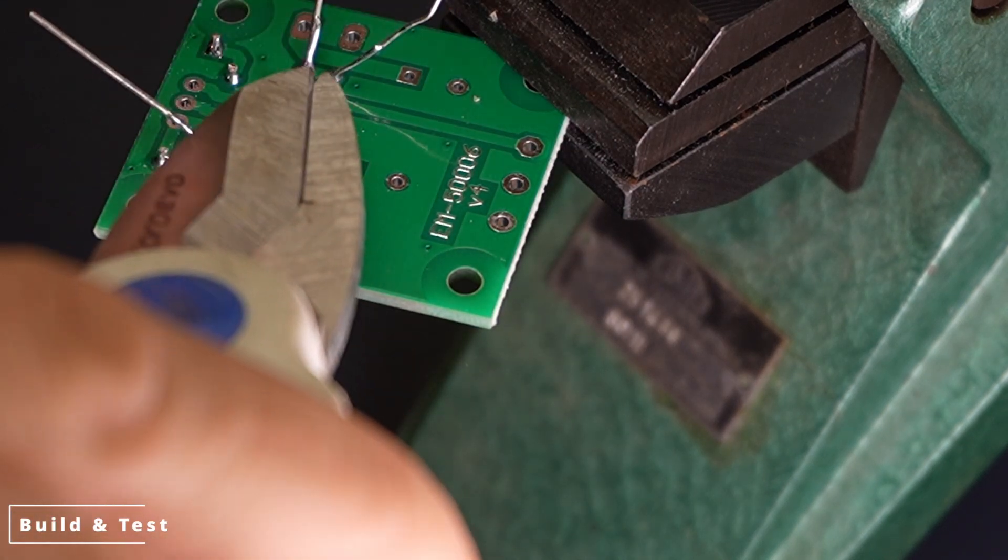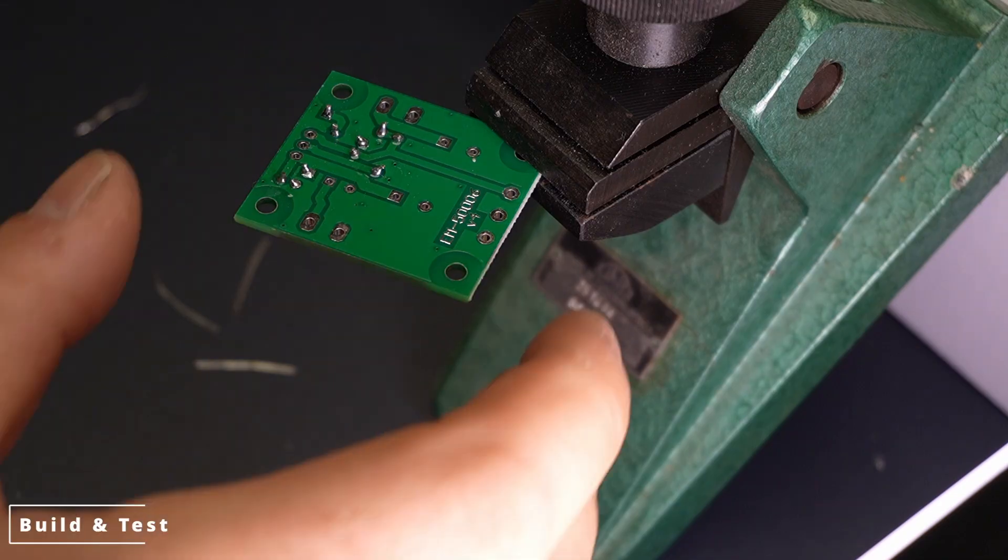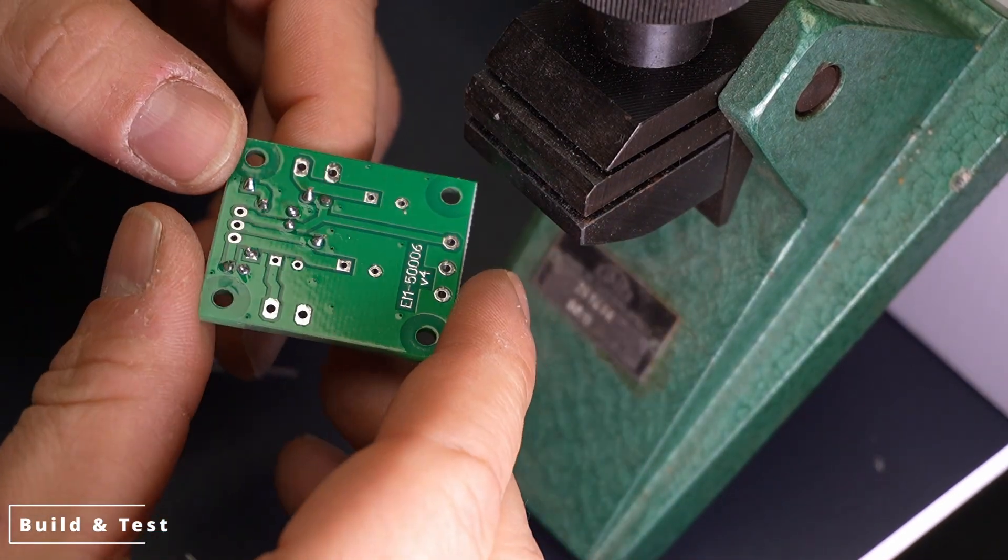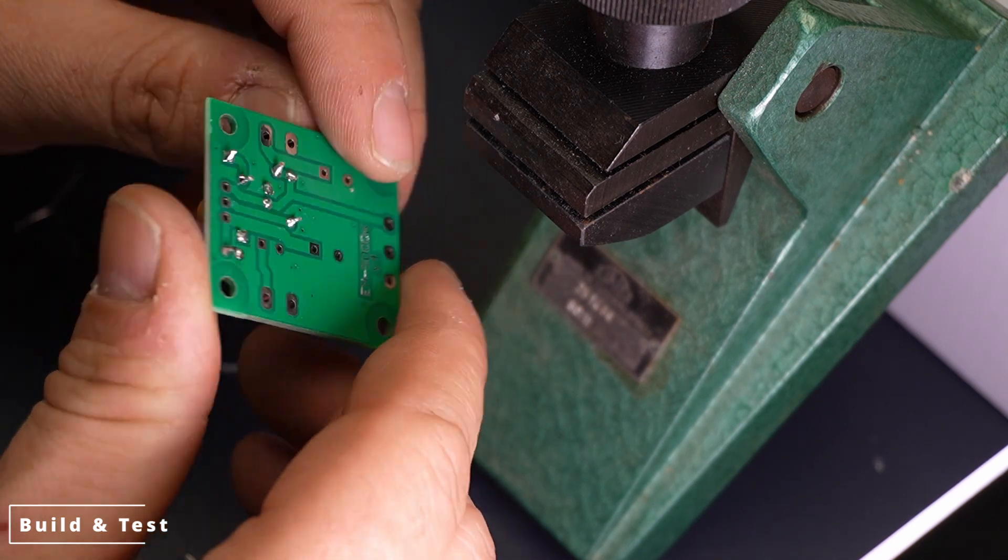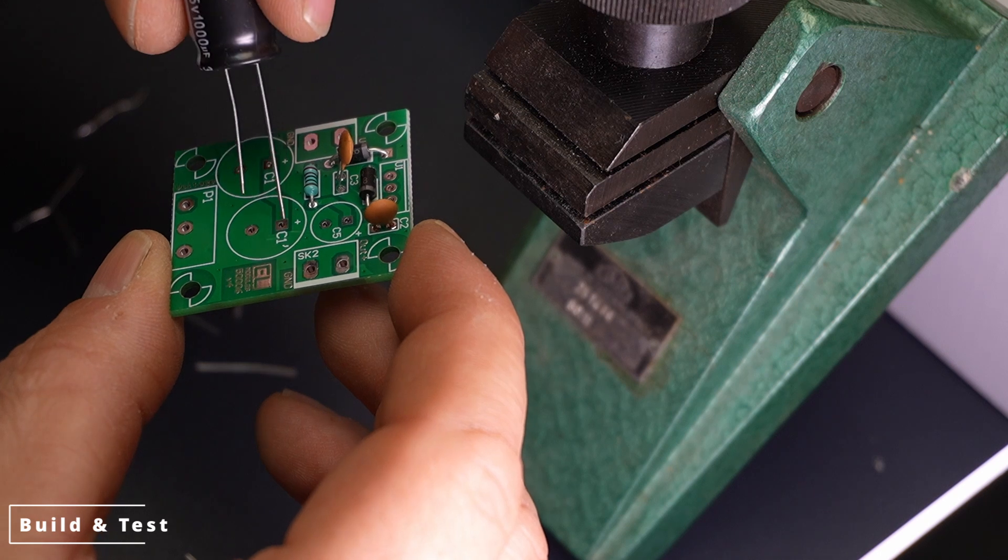Soldering the diodes and checking their polarity. Next we'll solder the diodes. It's very important to pay attention to their polarity. The stripe on the diode body helps with identification. Based on the markings on the PCB, make sure to insert them correctly.